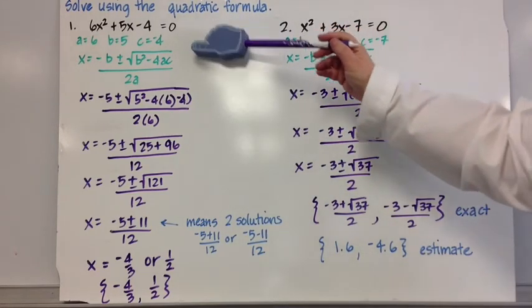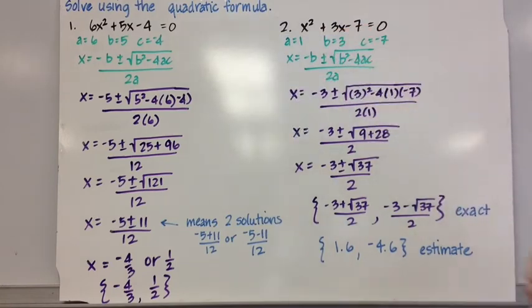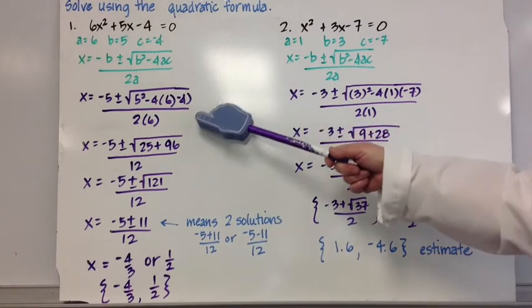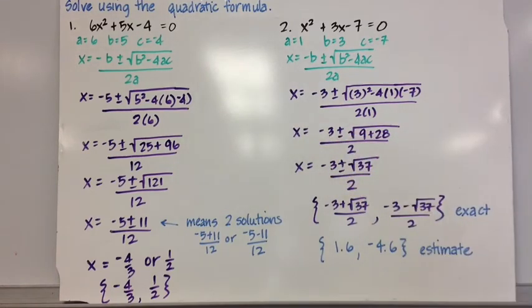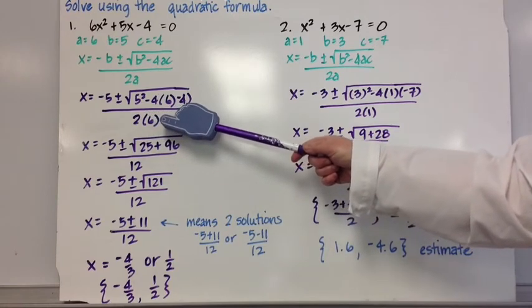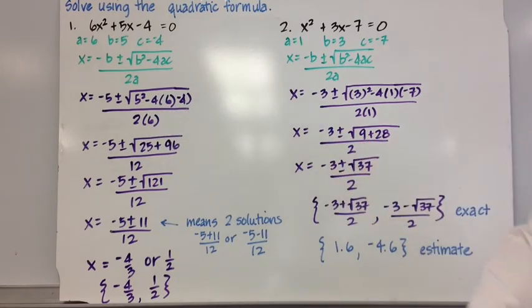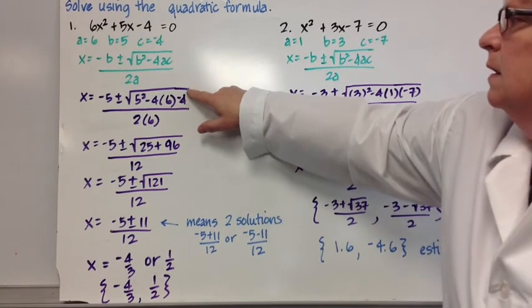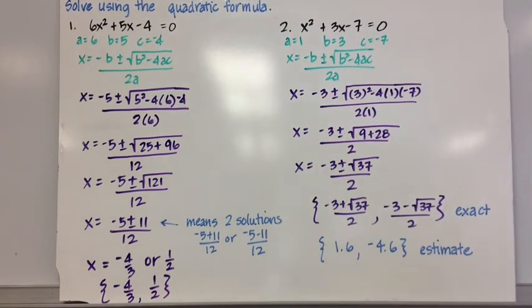And I just substitute the values for a, b, and c into the quadratic formula. Now, I recommend you actually show that because if you don't, you might mess up a sign, you might miss something, and that way you know exactly where you're starting. So I have negative 5 plus or minus the square root of 5 squared minus 4 times 6 times negative 4. All over 2 times 6.